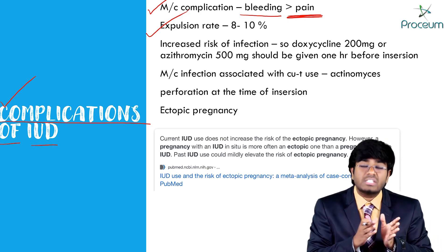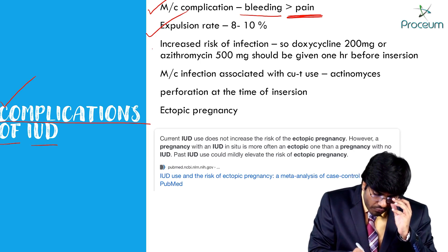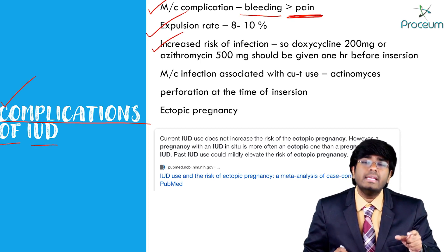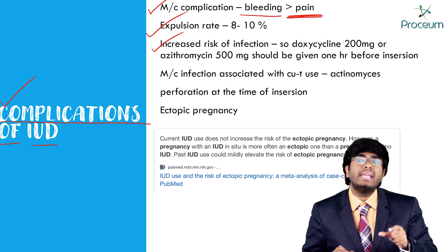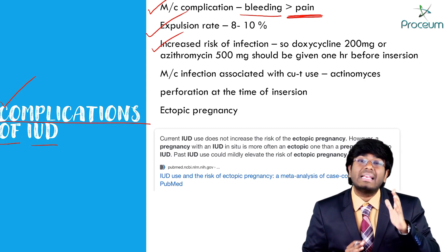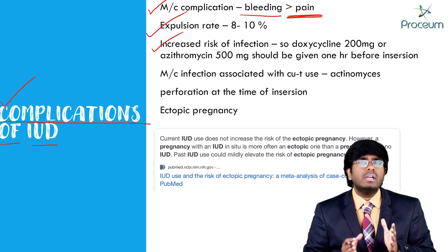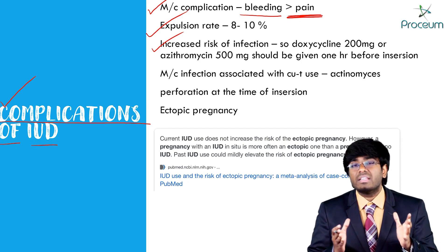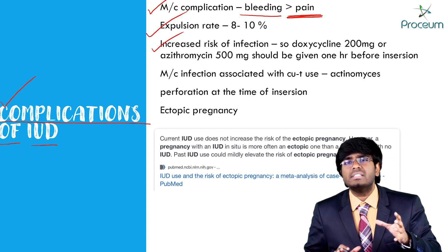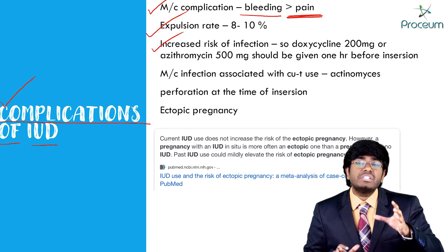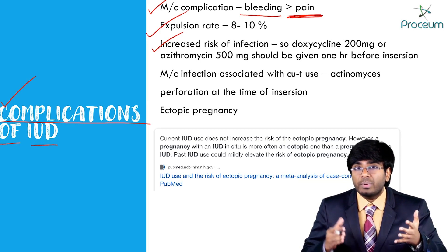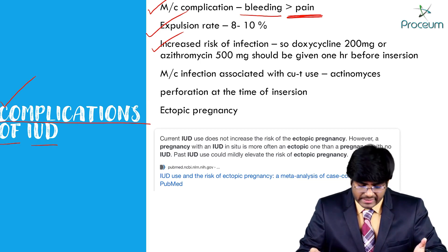Another complication is expulsion — uterine contractions can expel the copper T out. There is also an increased risk of infection. When placing an IUD, there is a significant chance of developing PID. The most common cause of PID is Chlamydia, and the drugs of choice for chlamydia are azithromycin and doxycycline.